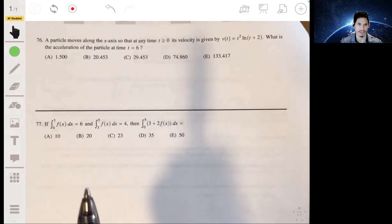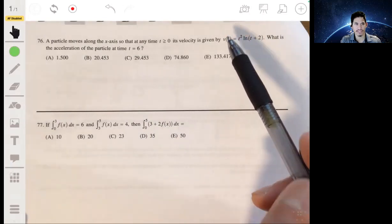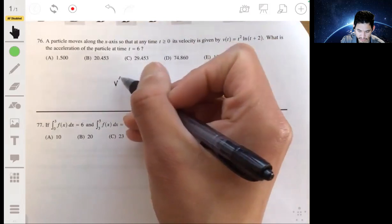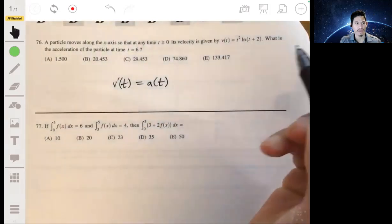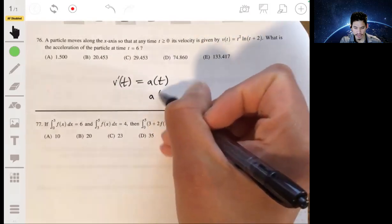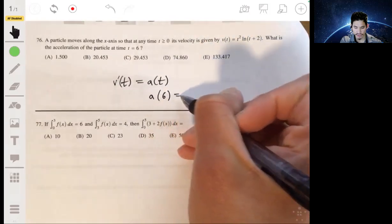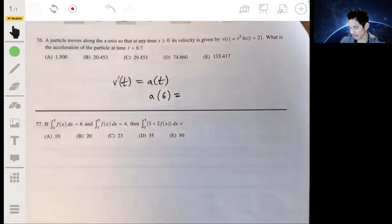Okay, so this one's actually not too much work as long as you get the general idea, and that's for you to know that the derivative of velocity is acceleration. So v prime of t is a of t, and then all you have to do is evaluate a of 6—evaluate the acceleration function when t is 6. Since this is a calculator allowed section of the exam, you can just use your calculator to do the work.